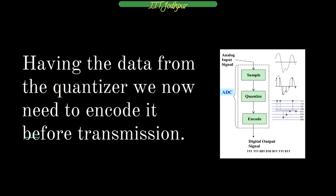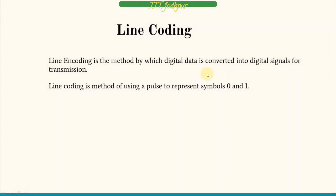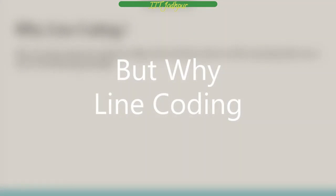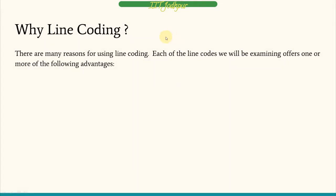Having data from the quantizer, the next step is encoding before final transmission. We use line coding. Line coding is a method by which we convert digital data into digital signals for transmission — in simple words, it is a method of using pulses to represent 0s and 1s. Here is the input stream and using line coding it has been converted into digital signals.